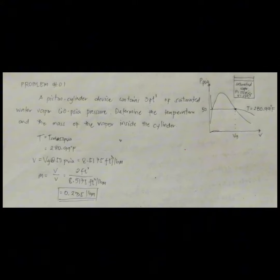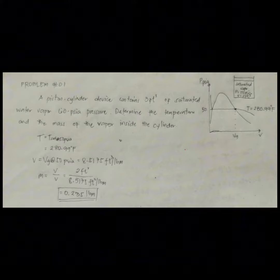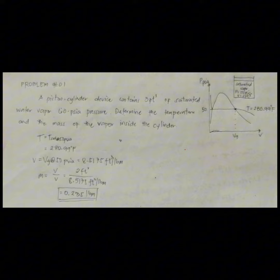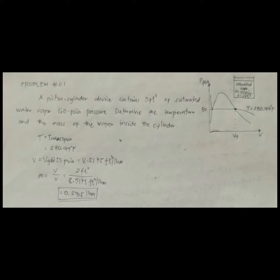Good day everyone and welcome again to another engineering solving session. Problem number one of the pure substance: A piston-cylinder device contains three cubic feet of saturated water vapor at 60 psi pressure. Determine the temperature and the mass of the vapor inside the cylinder.